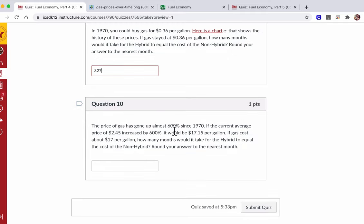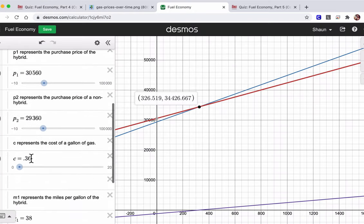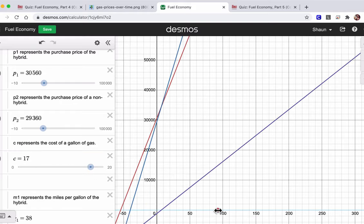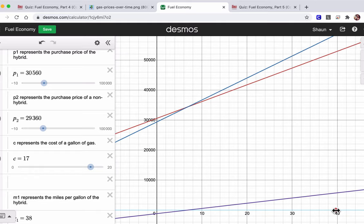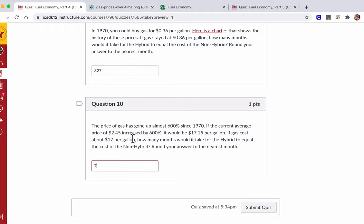And then finally, in question 10, the price of gas has gone over 600% since 1970. Now that's an actual, the amount you're spending, it's not in relative dollars. If the current average price of $2.45 increased by 600%, it would be about $17.15 per gallon. So I said, if gas costs about $17 per gallon, how many months would it take for the hybrid to equal the cost of the non-hybrid? So we go back here and let's change the cost of gas to $17. Hit enter. And now we have to go the other direction. The hybrid will be the much better deal even faster. I'm just holding shift and dragging because the cost of gas is so much. So you can see it's about 6.915 or seven months. So it's pretty dramatic. It's under a year. And the hybrid is the better deal.